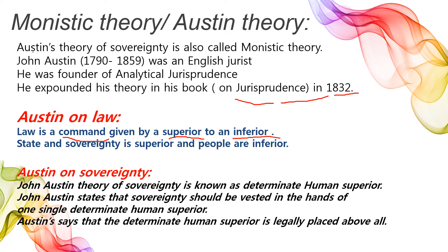State and sovereignty is superior and people are inferior. Austin keh rahe hain ki state, riyasat, yeh sovereignty — ekhtiyar-e-aala — wohi superior hain, aur jo people hain, wo inferior hain.